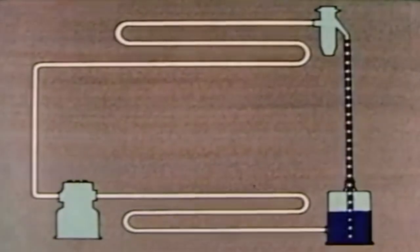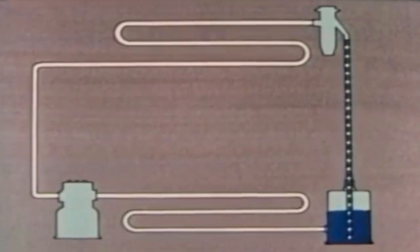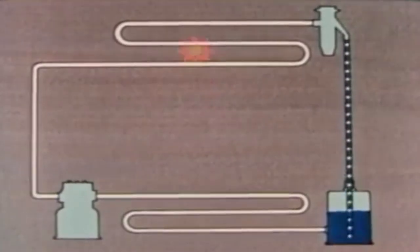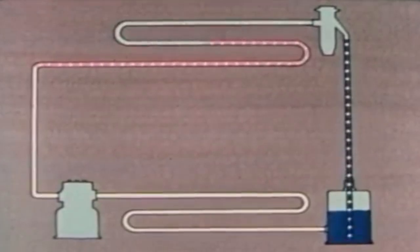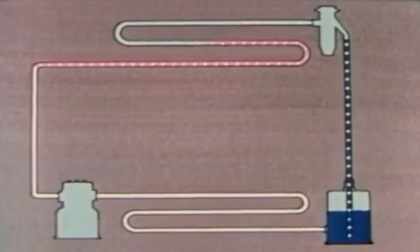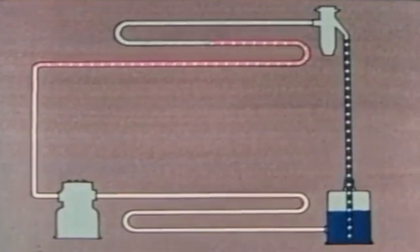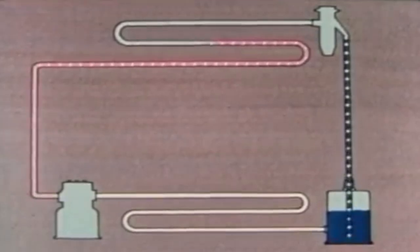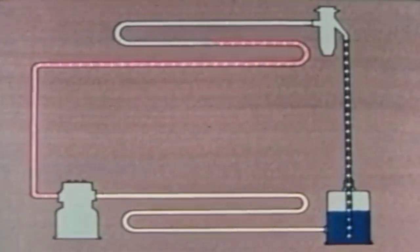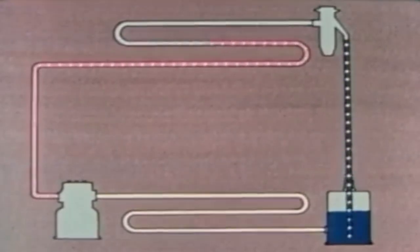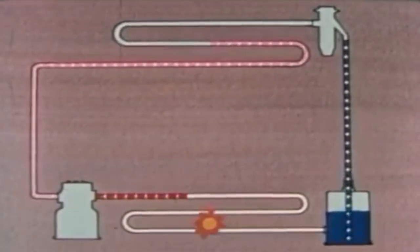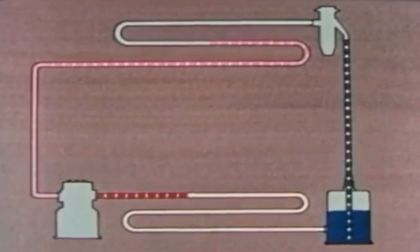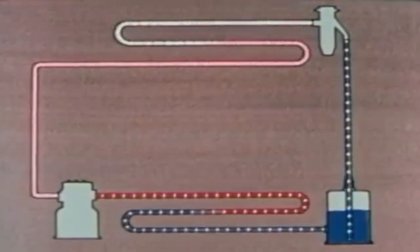Now let's review the whole thing. Refrigerant under high pressure flows from the receiver to the expansion valve. The valve causes a pressure drop. The evaporator takes in heat from the box — if anything in the box is hotter than the refrigerant, it gives up its heat to the refrigerant. As the refrigerant takes in heat, it changes from a liquid to a gas. The compressor sucks the vapor out of the evaporator and compresses it, increasing the pressure and temperature. The vapor is now hotter than the surrounding air, so in the condenser, heat is given off to the air. As the refrigerant loses its heat, it changes from a gas to a liquid and flows into the receiver.